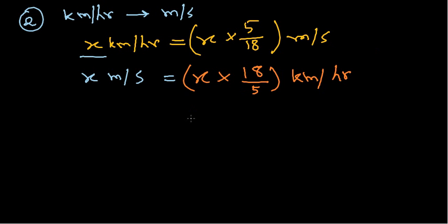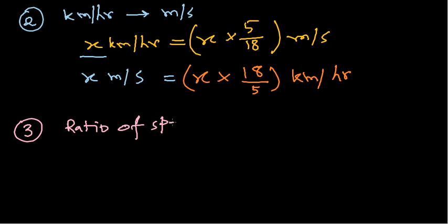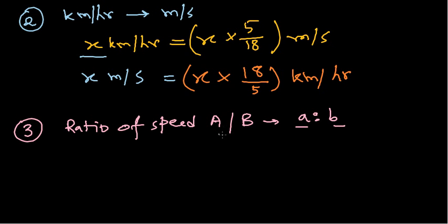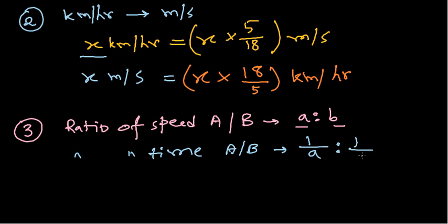The third formula is not required for all problems but is required for many. This formula is about the ratio of speeds. Suppose the ratio of speed of persons A and B is a : b (where small a and small b are the speeds). If that is the case, then the ratio of time taken by A and B to travel the same distance will be 1/a : 1/b, or simply b : a.